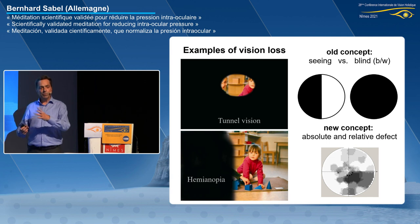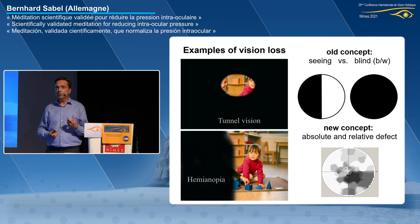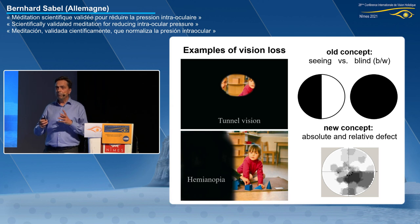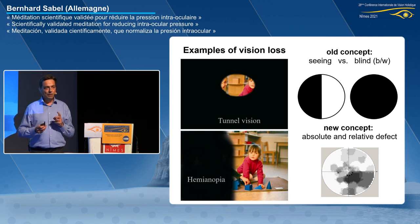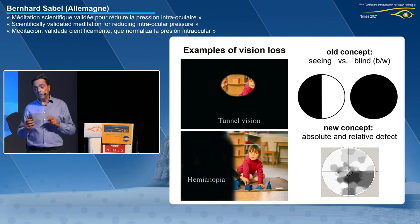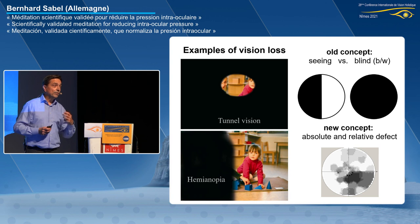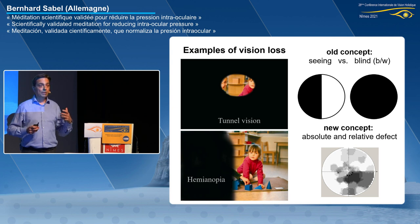What we are proposing is that vision cannot be judged as being either blind or seeing — there are shades of gray, and they are variable. These shades of gray are the most interesting subject for us because these are areas that are partially functioning. When it's partially functioning, the question comes: can you do something to improve the vision of partially functioning areas? Or even: is black really blind? Is there some vision behind the black curtain, and how do we open the curtain to see what's behind it?